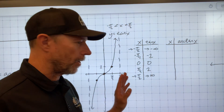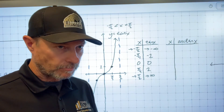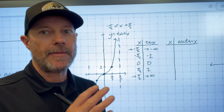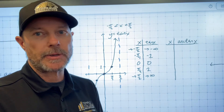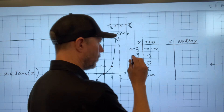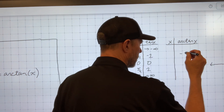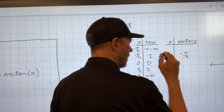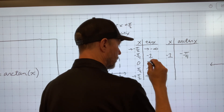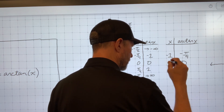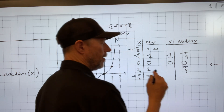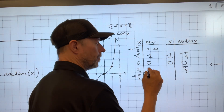The inverse function switches the x's and y's — it switches the inputs and the outputs, so the inputs become outputs and the outputs become inputs. For example, this input, negative π/4, becomes an output, and this output, negative one, becomes the input. Zero, zero will switch — we get the same point. This π/4 becomes an output, and this input, one, becomes an input.